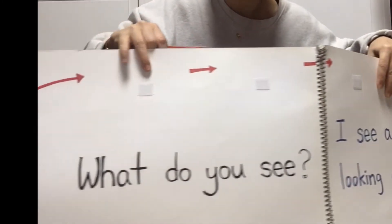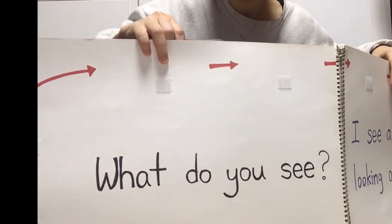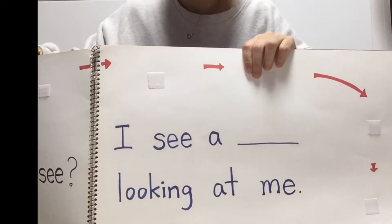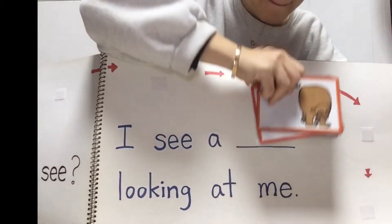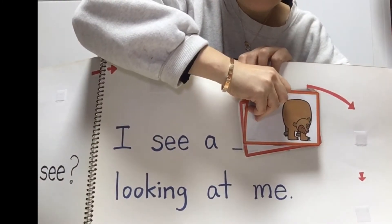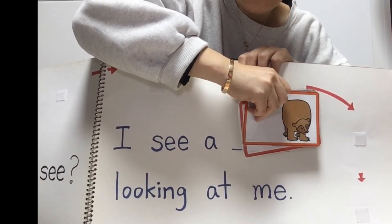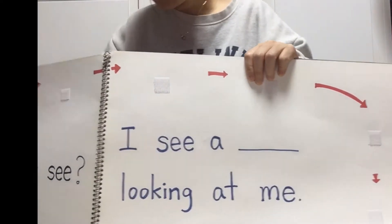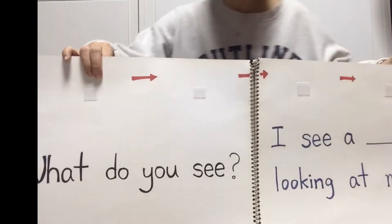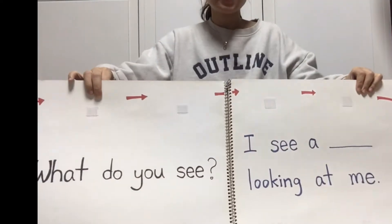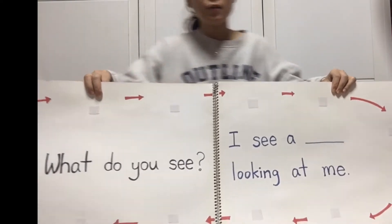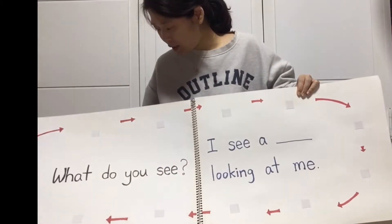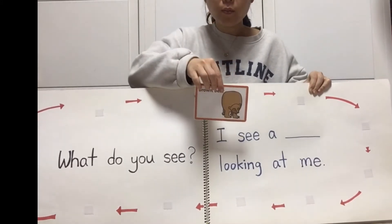It says, what do you see? And you can also practice: I see a mmm looking at me. So we're gonna sing a song together using all these cards. Let me step back so you can see the whole picture. Let's begin with brown bear.